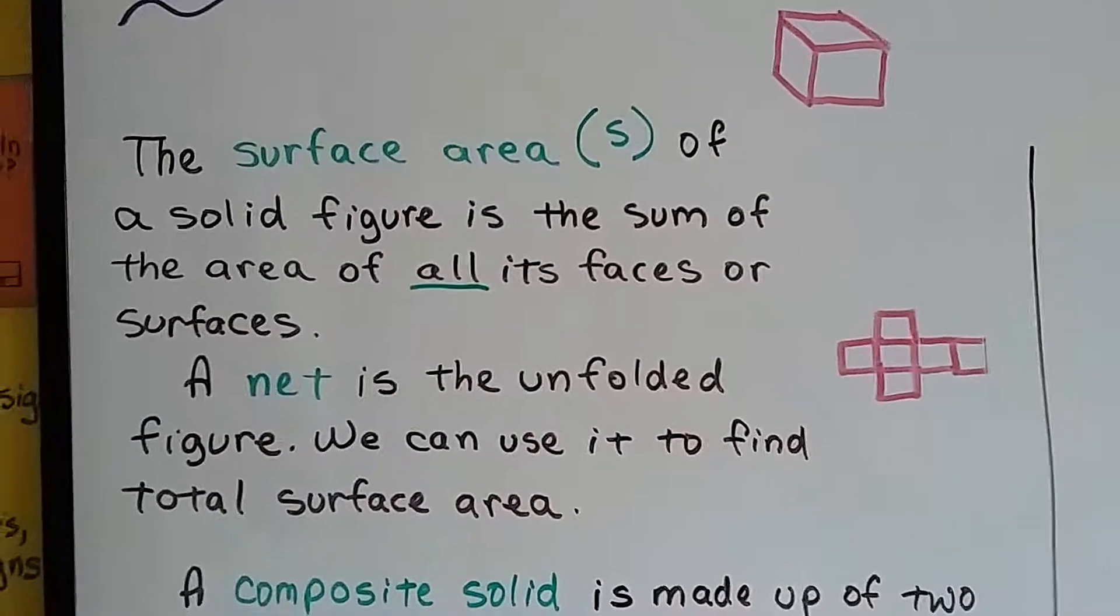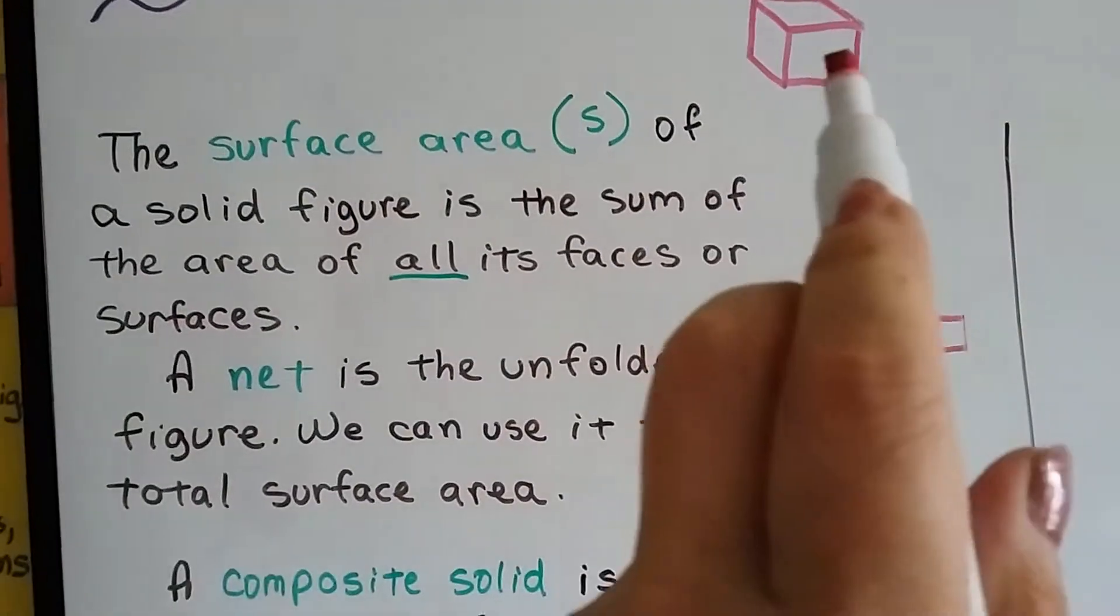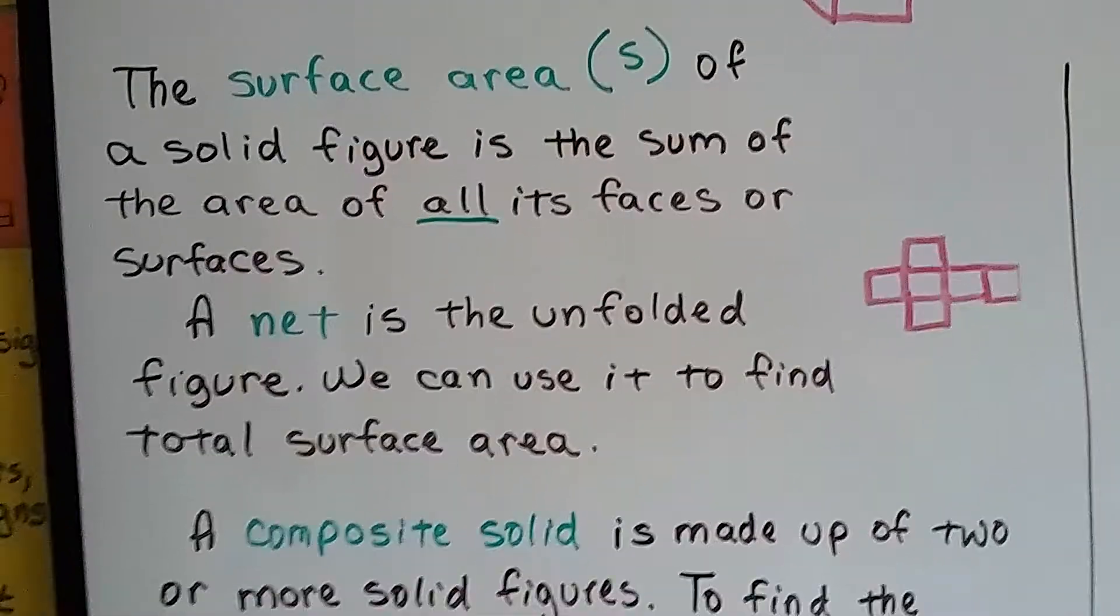A net is the unfolded figure, and we can use it to find total surface area.